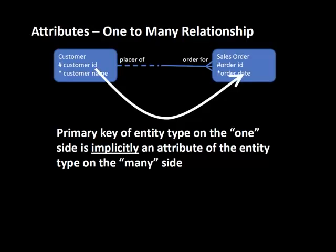This is a general rule for one-to-many relationships. In any one-to-many relationship, the primary key of the entity type on the one side is implicitly an attribute of the entity on the many side. The crowfoot is where the many is; the absence of crowfoot is where the one is. So it's as if we took the customer ID and also added it to the sales order entity.